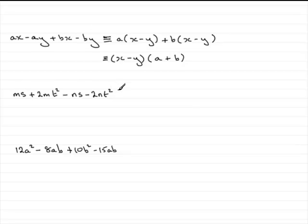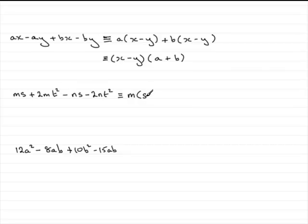Now I've picked this next example — there's a little twist to it. No common factors throughout, but if we look at the first pair of terms we've got m as a common factor. So we can write that this is identical to m bracket, and inside we have s plus 2t squared. So that's our factorisation of the first pair of terms.